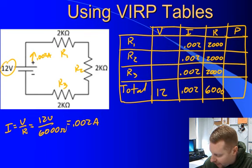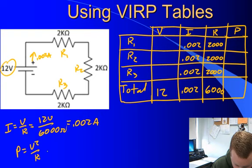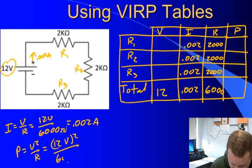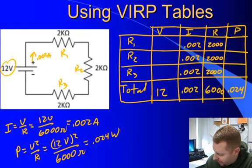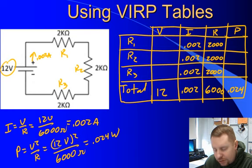Now I can calculate total power. Using P = V²/R: 12 volts squared over 6,000 ohms gives 0.024 watts. With current and resistance known for each row, I can find voltage drops. V = IR by Ohm's Law, so the voltage drop across R1 is 0.002 amps times 2,000 ohms, which equals 4 volts.